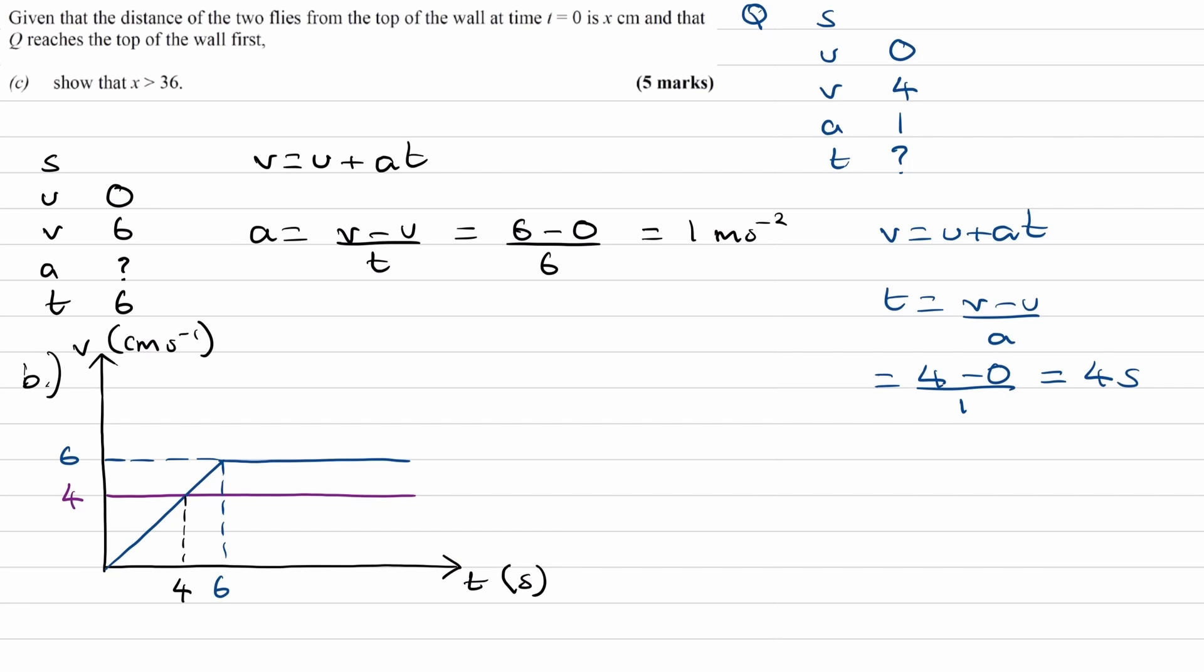Fly P, which remember is shown by the purple line here, starts at a speed of 4, where Q, the blue line, starts at a speed of 0. So P is therefore going to be ahead of Q to begin with. Eventually, Q then gets to a speed of 6 meters per second, and then it will start when it increases in speed past the speed of P's. In this stage here is when Q will then start to catch up to P. Once Q has caught up to P, then the wall can end. The wall has to be long enough for Q to catch up to P. So the distance at which Q catches up to P, that's the smallest height the wall can have. That will be the minimum value of x.